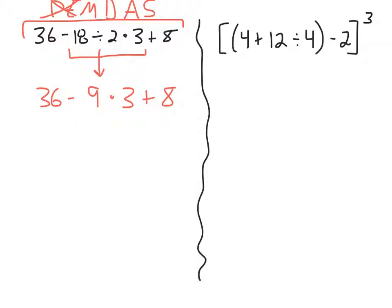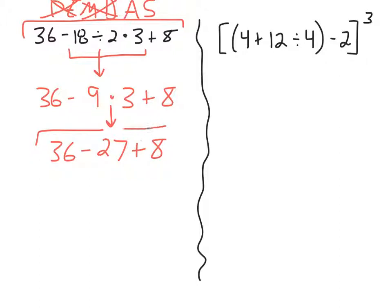I did division before multiplication because I'm working left to right. Going back to PEMDAS, I still have a multiplication, and that comes before subtraction or addition. So I finish multiplications and divisions first: 9 times 3 is 27. I rewrite the problem: 36 minus 27 plus 8. Now I'm left with subtraction and addition. Even though A comes before S in PEMDAS, you do not always add before you subtract — you do addition and subtraction from left to right. So 36 minus 27 is 9, then 9 plus 8 is 17. My answer is 17.